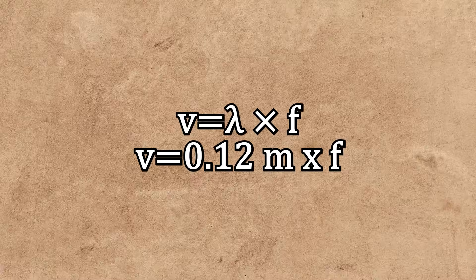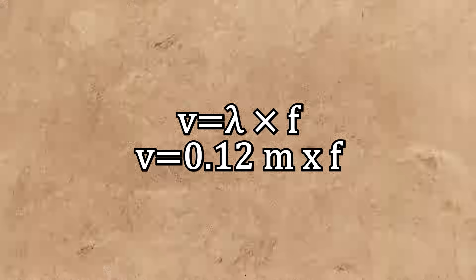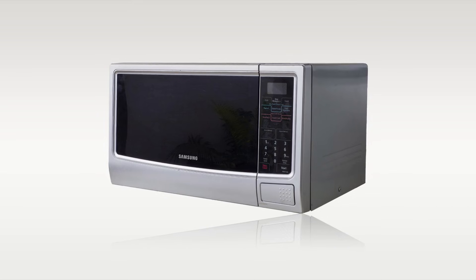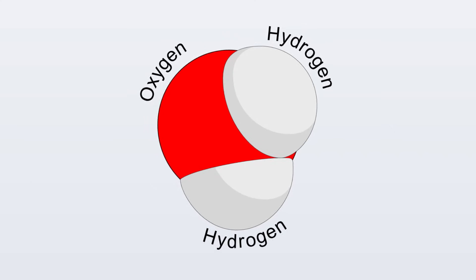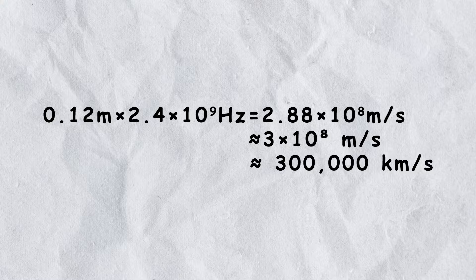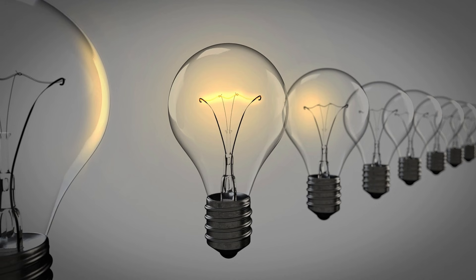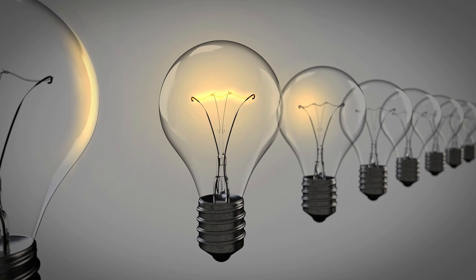By multiplying this by the frequency the microwave runs at, 2.45 gigahertz, the frequency used in microwaves which makes water molecules vibrate, we get almost 300,000 kilometers per second, which is an approximation of the speed of light.